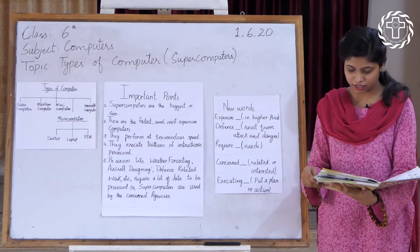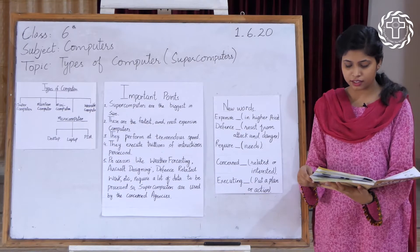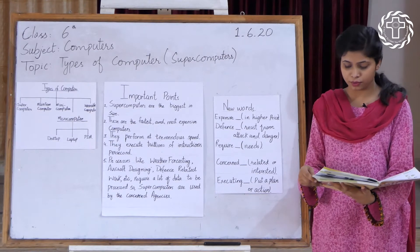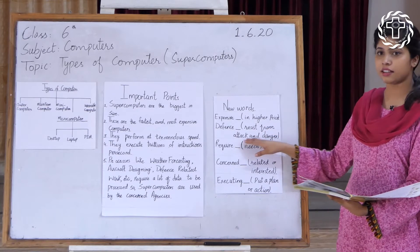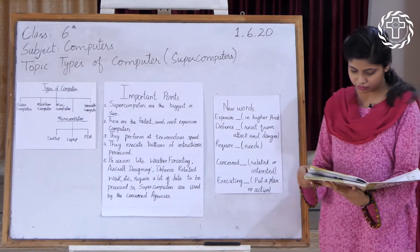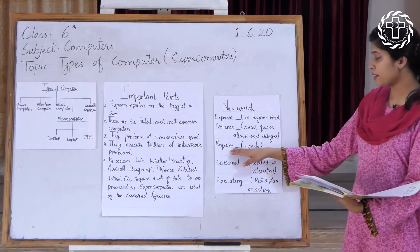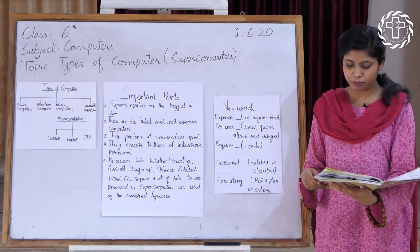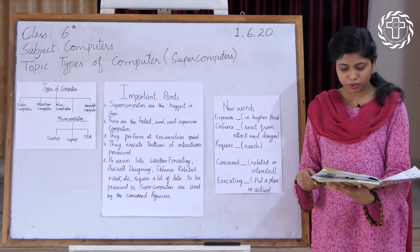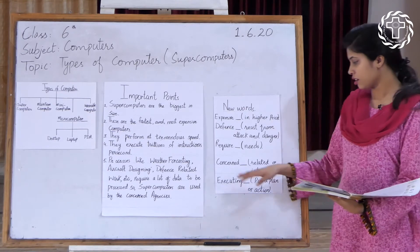Processes like weather forecasting, aircraft, defense-related work—defense means resist from attack and danger—etc., required, required means needs, a lot of data to be processed. So supercomputers are used by concerned agencies. Concerned means related or interested.